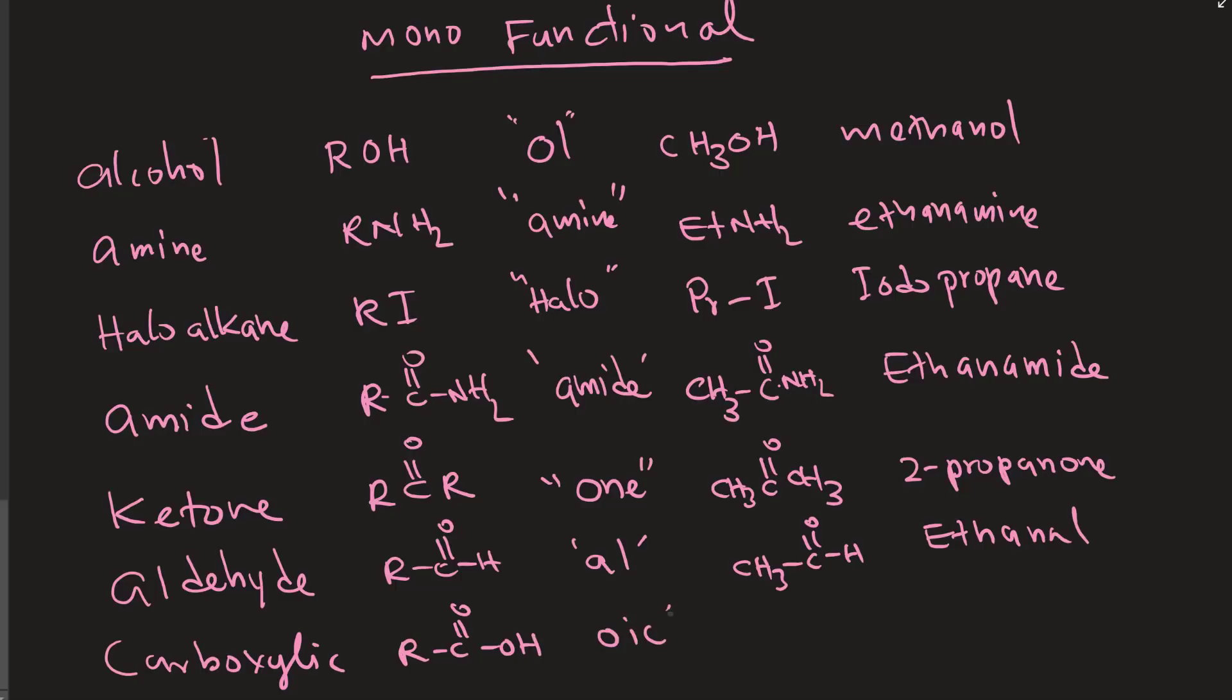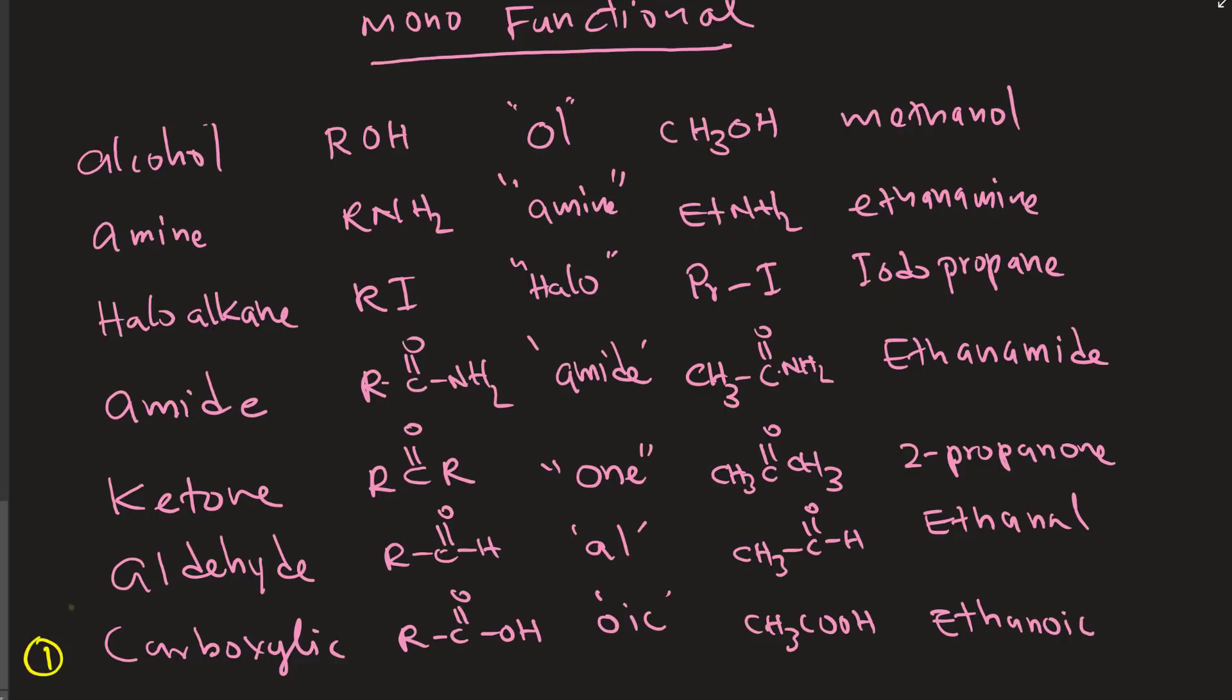Now the last one, carboxylic acid, RC double bond O, O, H. It ends up with oic, CH3Q, the most popular one, ethanoic acid, acetic acid vinegar. So it's better to know that one.